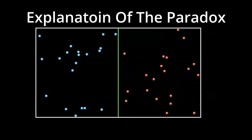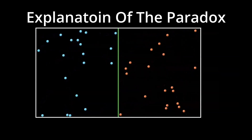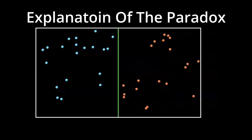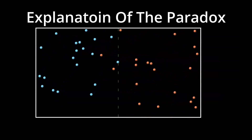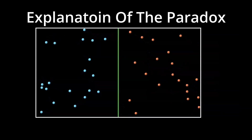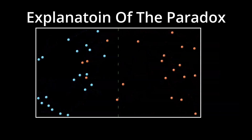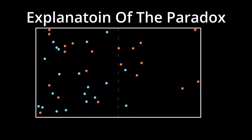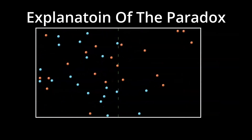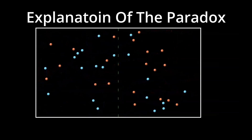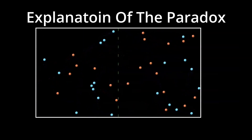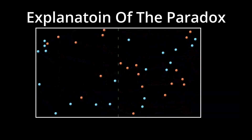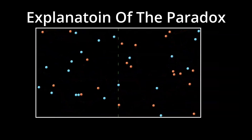Imagine a thermally insulated container divided by a partition. On one side, we have hot gas particles labeled in red, moving rapidly. On the other side, we have colder gas particles labeled in white, moving more slowly. These particles are all the same, but the color helps us track which were initially hot and which were cold. When the partition is open, the particles mix. The fast-moving red particles collide with the slower white particles, slowing down and speeding them up until both sides reach a uniform temperature. At equilibrium, the system follows a Maxwell-Boltzmann velocity distribution, meaning most particles have similar average speed, but some move slower and some faster. This process illustrates thermal equilibrium — the total energy stays constant, but the entropy, or disorder, increases as the particles spread out and their speeds even out.